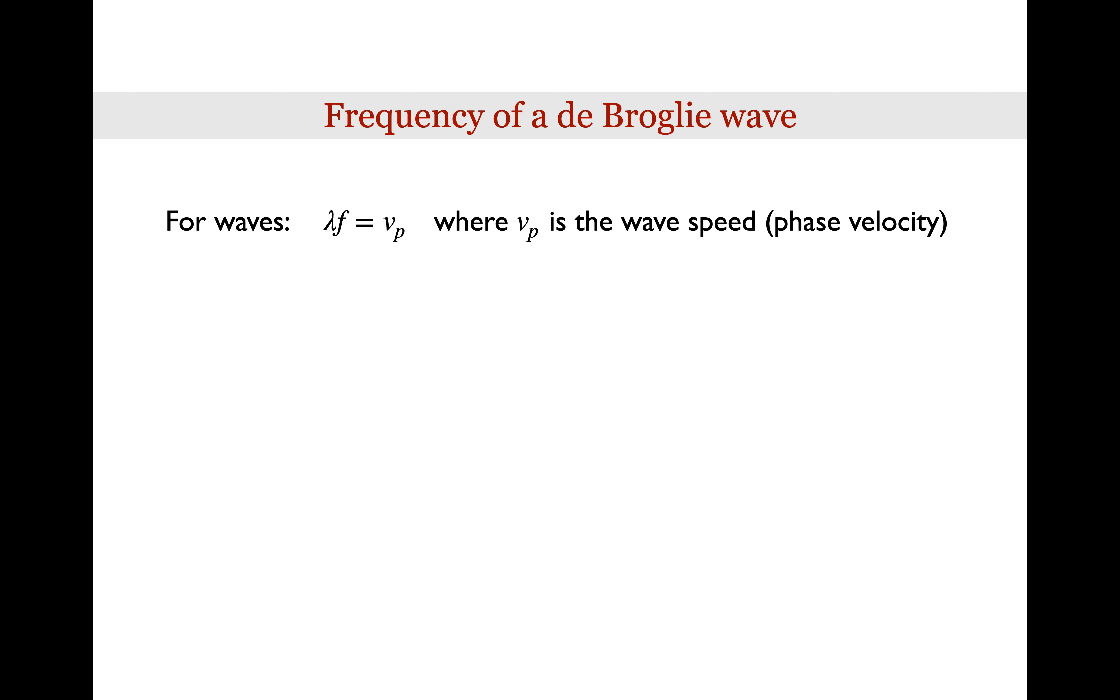We've seen that the wavelength or the wave number of the de Broglie wave tells us the wave's momentum. But what about the angular frequency omega of the wave? What does it tell us? For traveling waves, we know that the frequency times the wavelength is the speed of the wave, and more technically, it's the phase velocity of the wave. Unfortunately, we don't know what the speed of a de Broglie wave is for a particle, so we can't really use this expression.